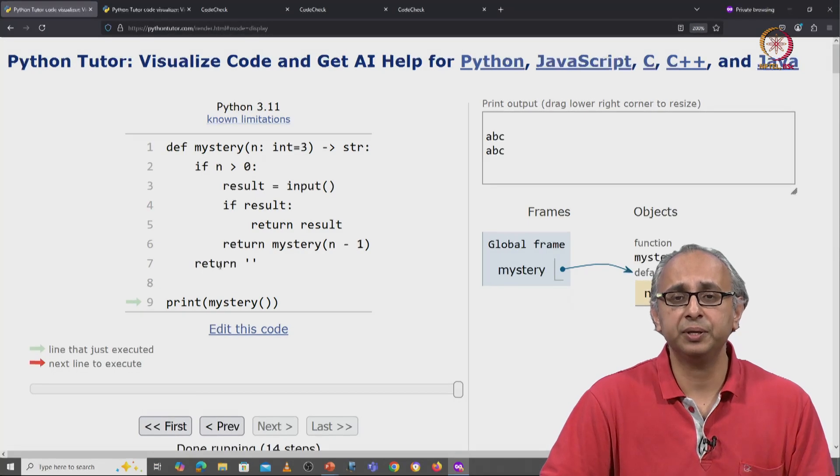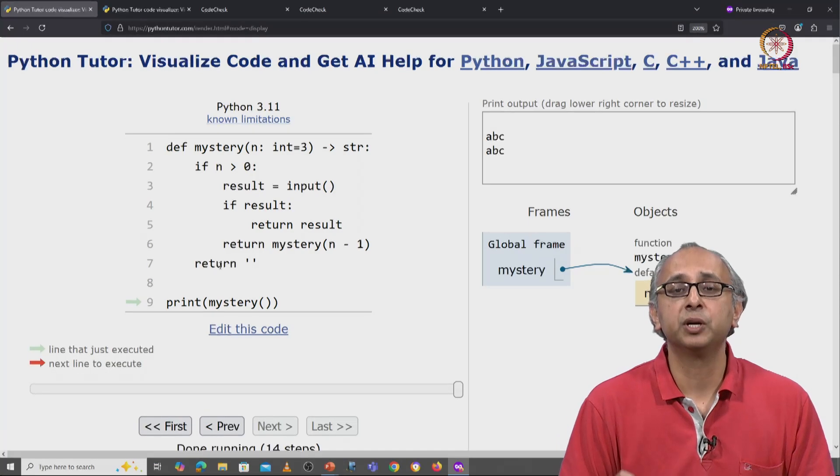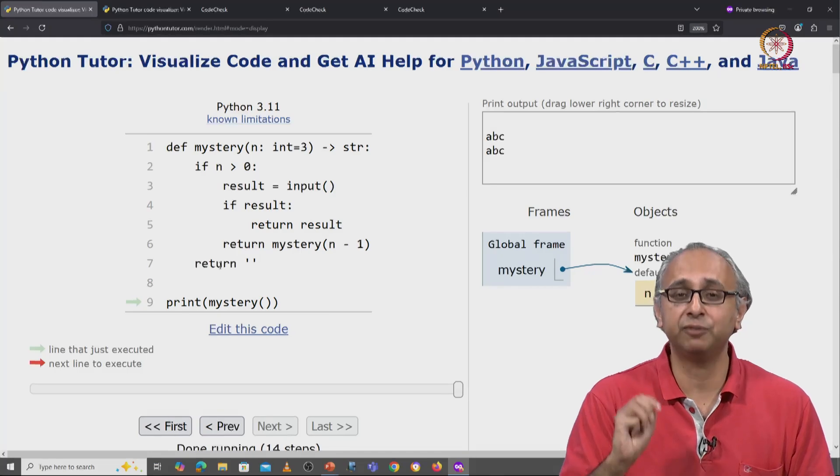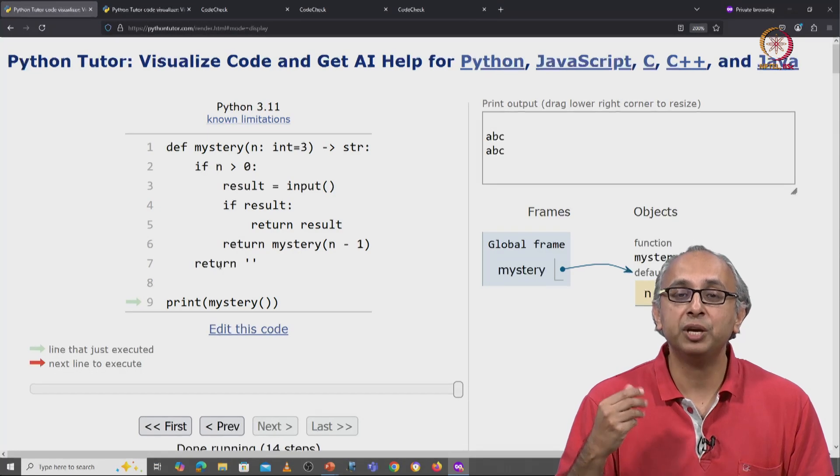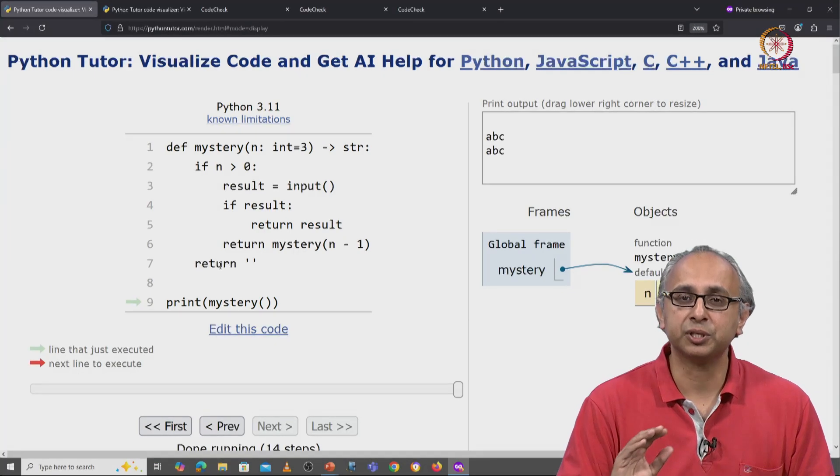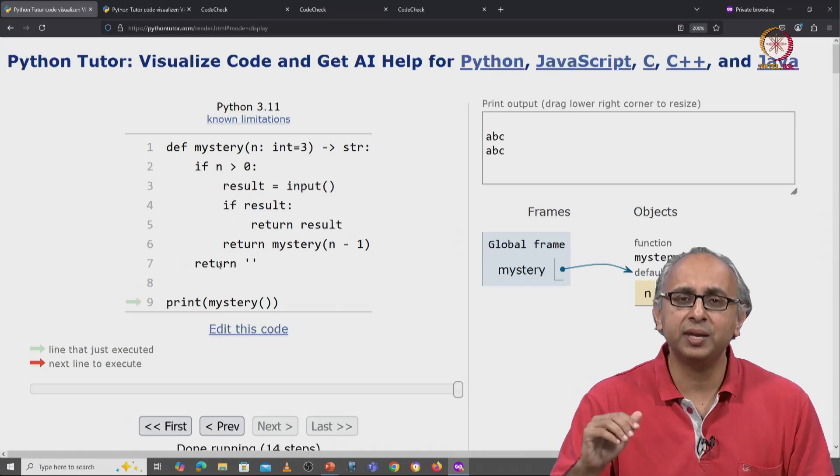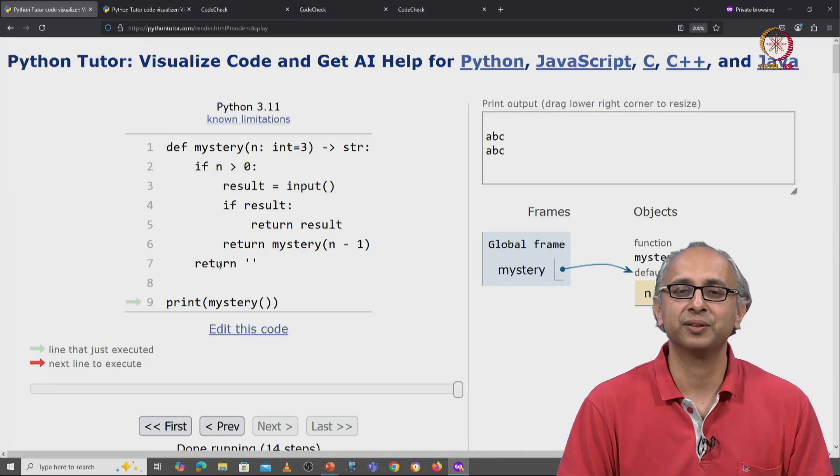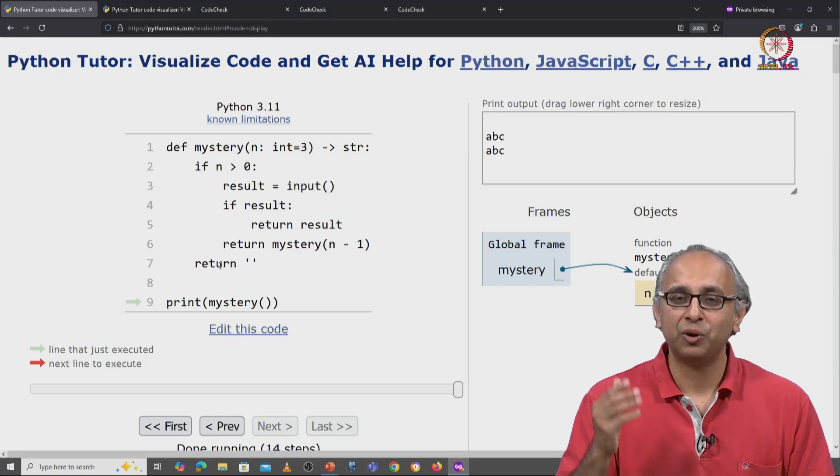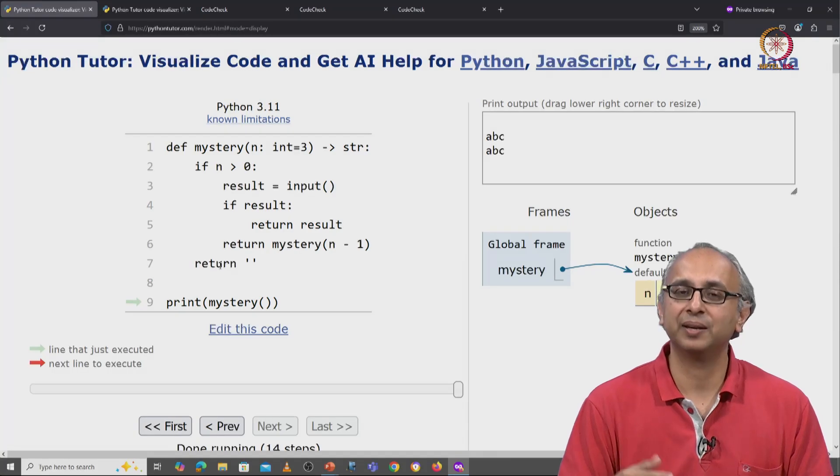So once again, try this out and see if you believe what I just said, that this function tries n times and if you don't specify an n, the default value is 3. So it tries n times asking the user to input a non-empty string and if the user does input a non-empty string within n tries, it returns that string. And if the user repeatedly enters empty string for all n attempts, then it will actually just return the empty string.